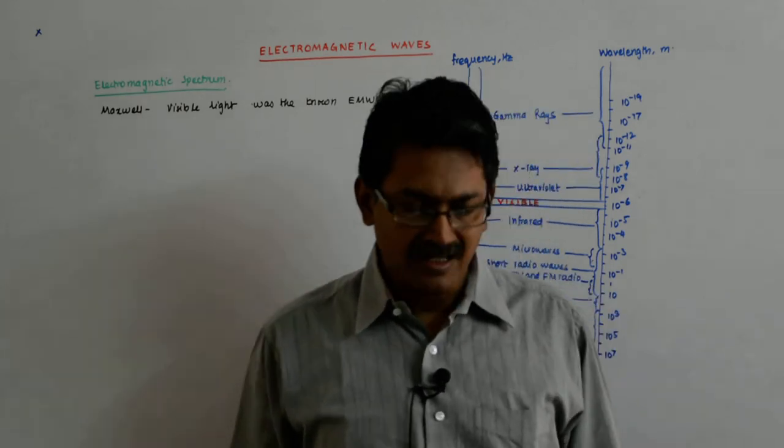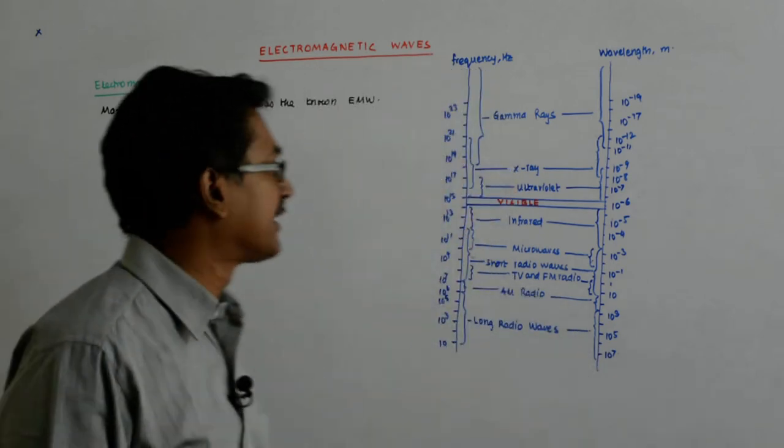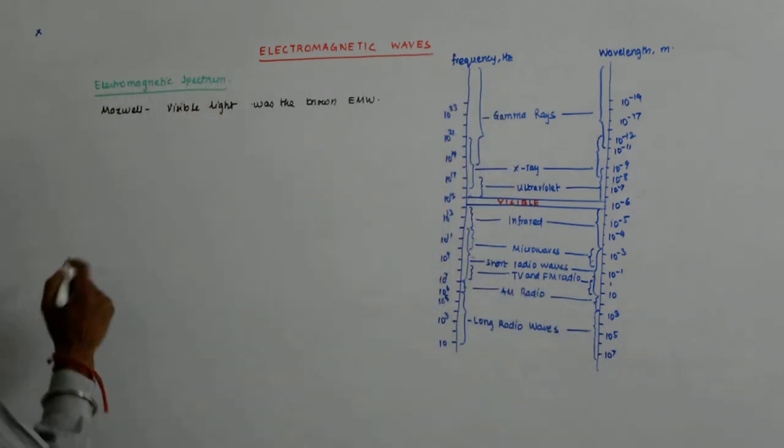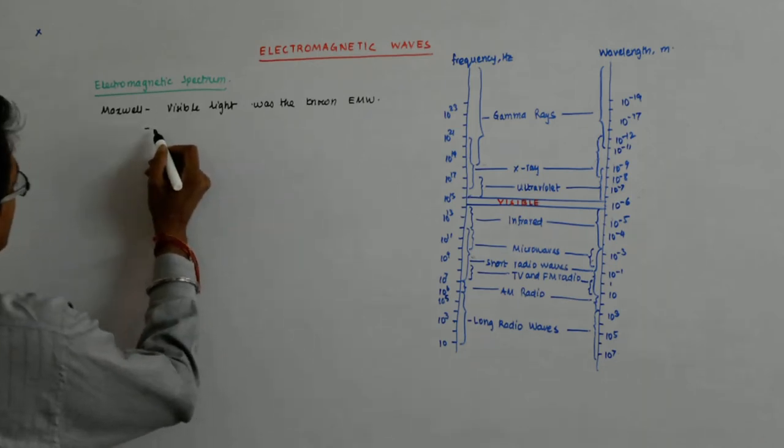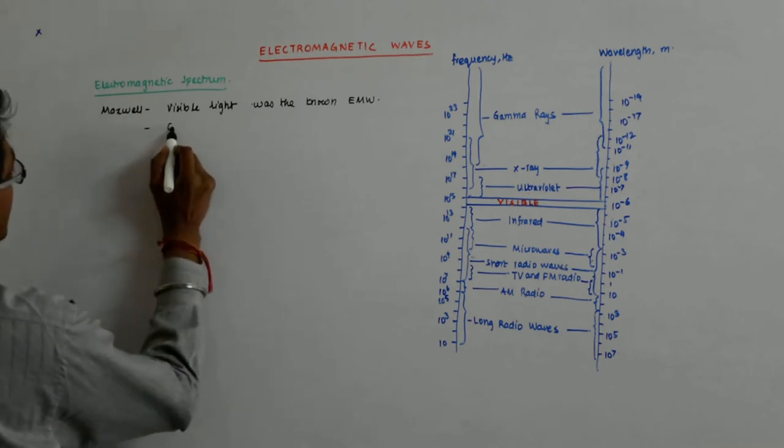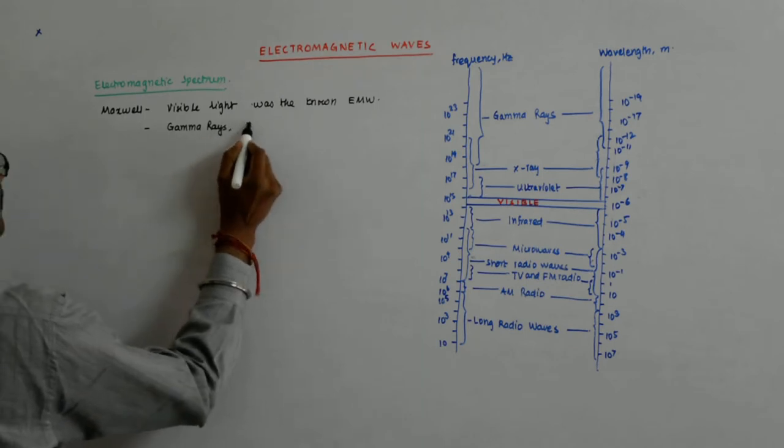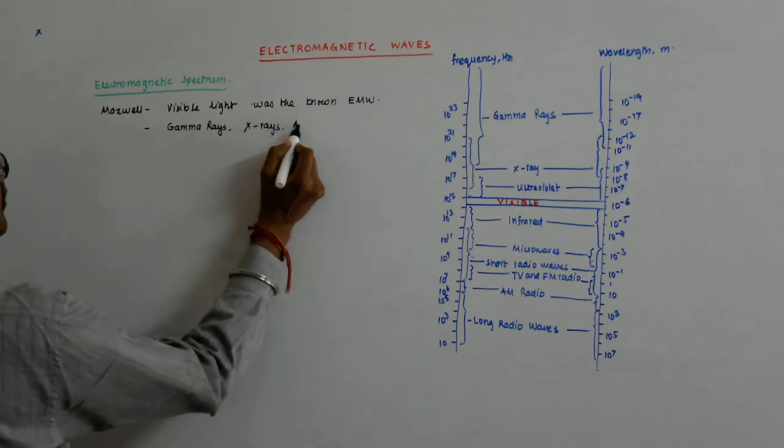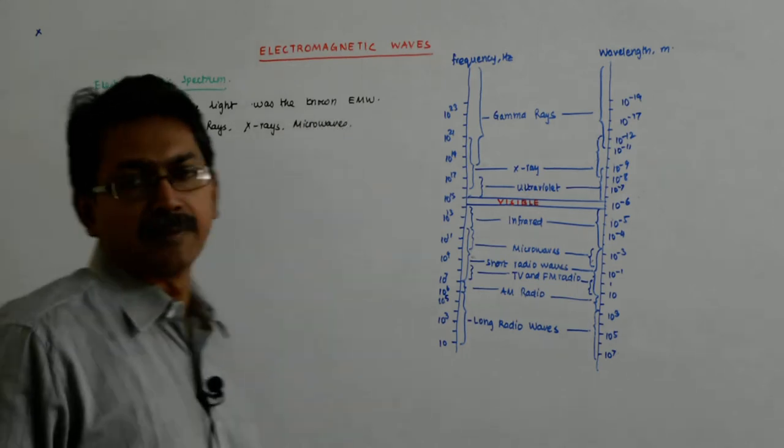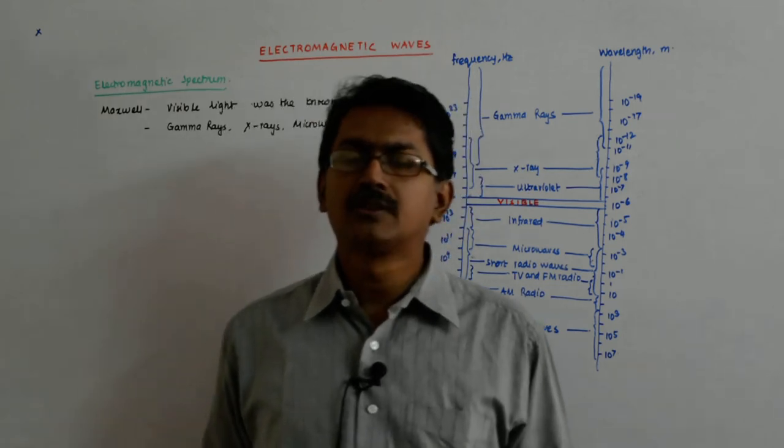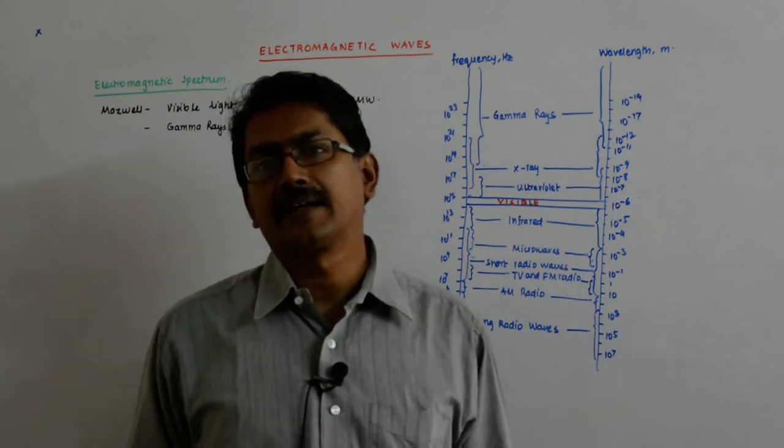But as the time passed, more and more waves got added to the system and then by the end of the 19th century, we had gamma rays, x-rays, microwaves, all of them got detected. So much so that microwaves start getting used at the time of World War in radars.